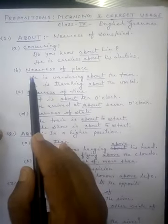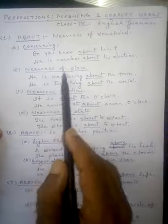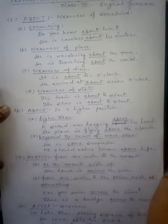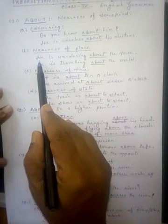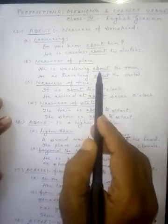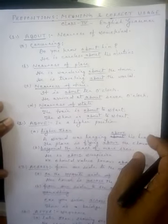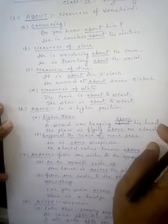Second, the nearness of place. He is wandering about the town. He is traveling about the world. Third, nearness of time: it is about 10 o'clock, he arrived at about 7 o'clock.